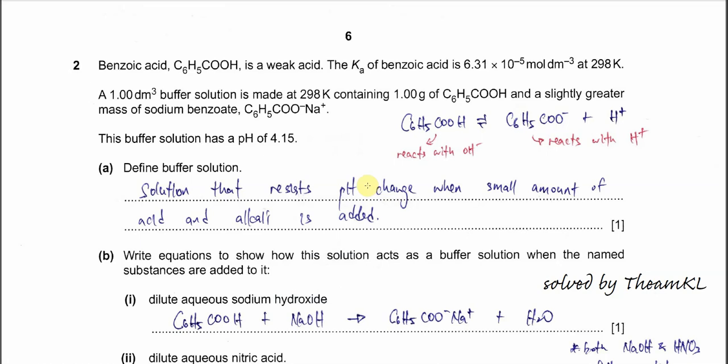Question 2. Benzoic acid is a weak acid and the Ka is given, which is 6.31 times 10^-5 mol per dm^3. A 1 dm^3 buffer solution is made containing 1 gram of benzoic acid and some mass of sodium benzoate, and the buffer solution has a pH of 4.15. We're going to use all these informations for calculations later.